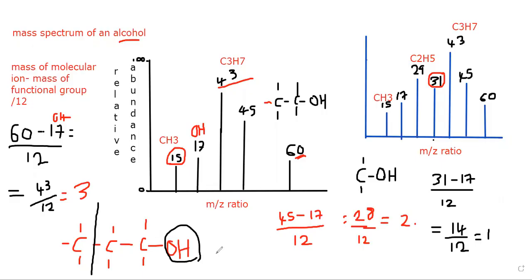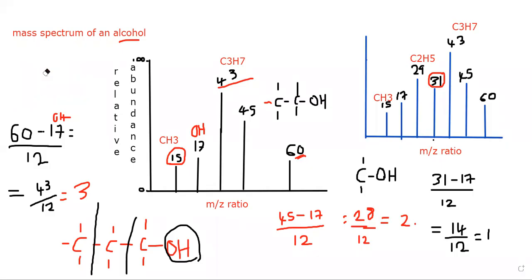For fragment 31, the molecule would have to fragment at that position. So this mass spectrum fits 1-propanol. You could not draw 2-propanol from this data.